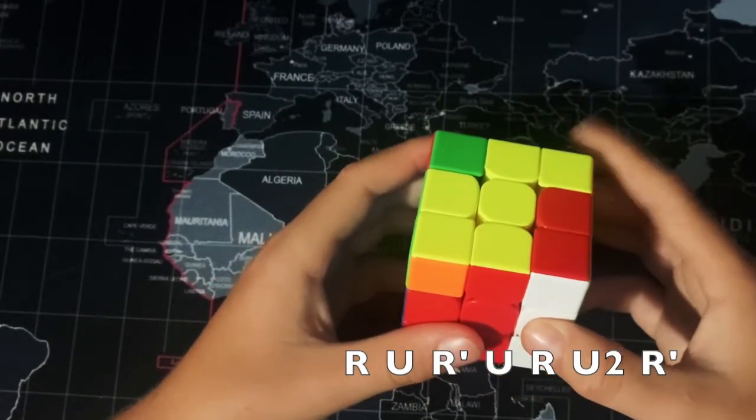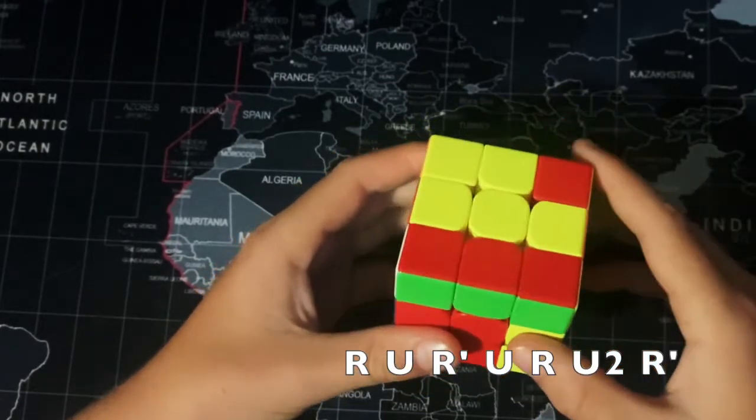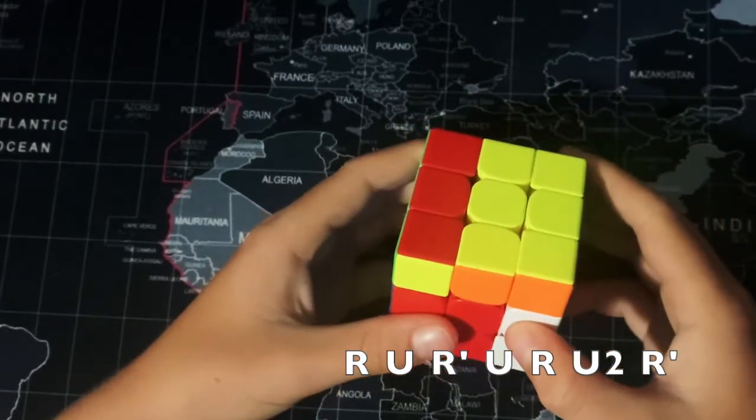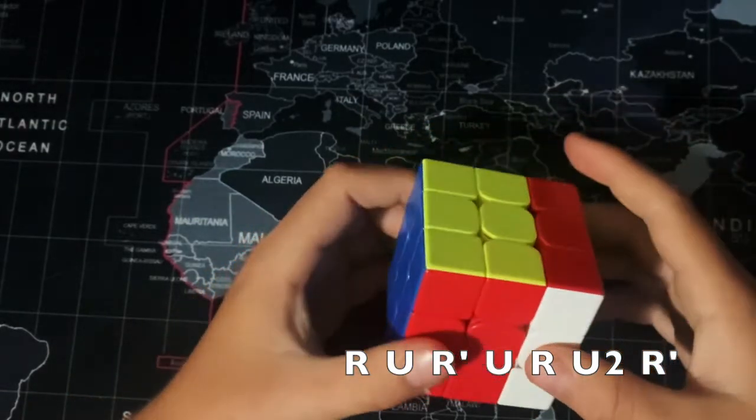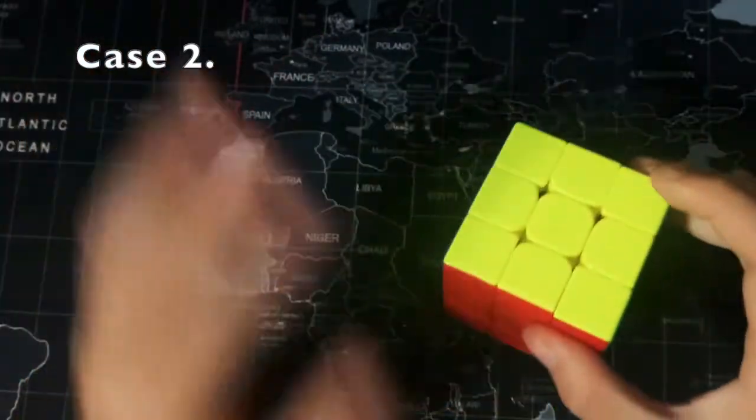So what you're going to do is this: R, U, R' U, R', U2, R'. And there you go guys, that's the second case.